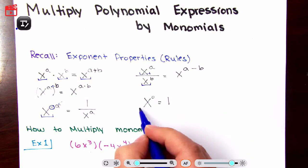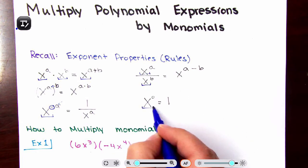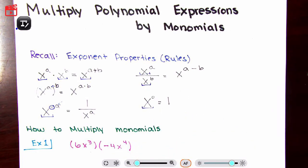And for the last property, we have x to the power of 0. Anything to the power of 0 is 1. Three to the power of 0 is 1, 8 to the power of 0 is 1 — anything to the power of 0 is 1.